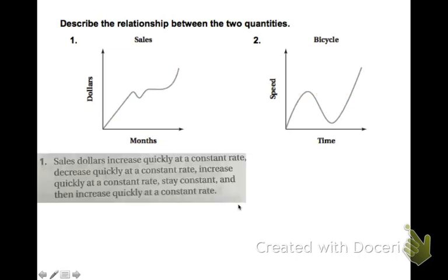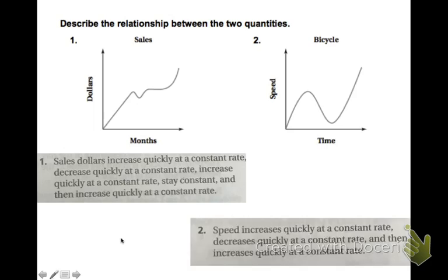The sales dollars are going to increase quickly, and it's kind of linear, so at a constant rate. It will decrease quickly. It will increase quickly. Then it will stay constant for a time, a few months maybe, and then increase quickly again at that constant rate. For number two, your bicycle speed will increase quickly at a constant rate, decrease quickly at a constant rate, and then increase quickly at a constant rate again.